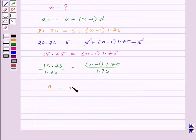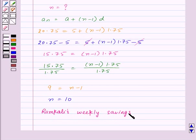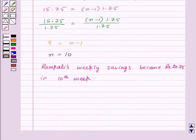So this will be 15.75 upon 1.75 equal to n minus 1. That is 9 equal to n minus 1, that means n is equal to 10. So Ramkali's weekly savings become rupees 20.75 in 10th week.